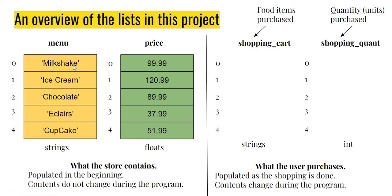The price list is the same length as the menu because there's a perfect correspondence between them — for example, the price of milkshake is 99.99 and the price of eclairs is 37.99 per unit. This price list contains numbers with decimal places, so they are all floating point numbers, or floats. The important point is that these two lists — menu and price — are populated at the very beginning and their contents do not change during the program.